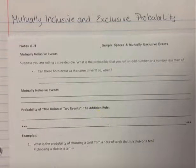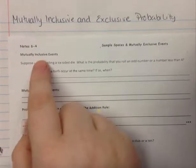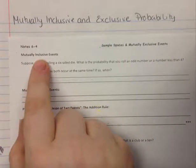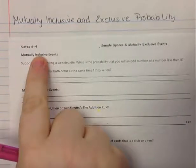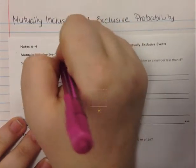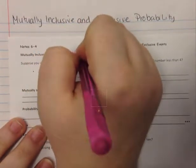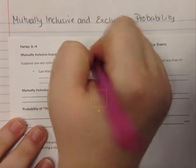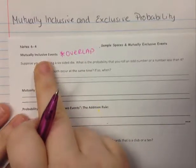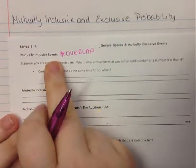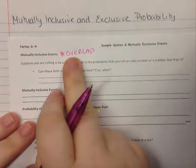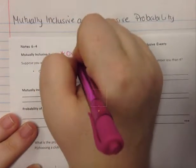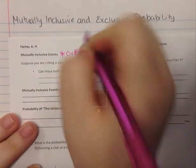This video is on mutually inclusive and exclusive probability. We're going to be focusing on inclusive events. Exclusive events was when there was no overlap, so inclusive events means that there will be overlap. These events are still an OR problem, so it should be one event happening, but you're going to have something that overlaps. Something will overlap.